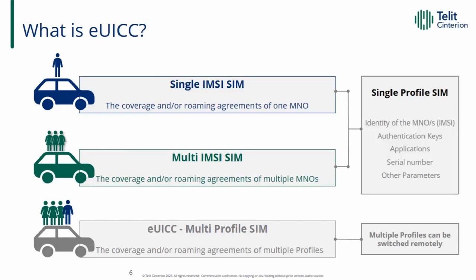Let's understand what EUICC is without getting into too many technical details, and also look at the evolution of SIM technology. First, we have the single-IMSI SIM, which offers coverage and roaming agreements of one MNO. Then we have the multi-IMSI SIM, which offers coverage and roaming agreements of multiple MNOs. These are single-profile SIMs. The profile includes parameters such as the identity of the MNO providing coverage and roaming agreements — known as the IMSI — as well as authentication codes, applications, etc. Each SIM has a profile coded into the hardware. While some changes can be made remotely, the profile itself is fixed and singular.